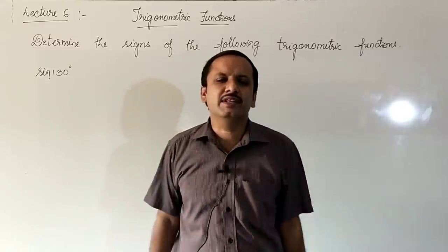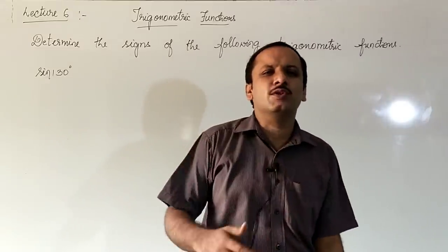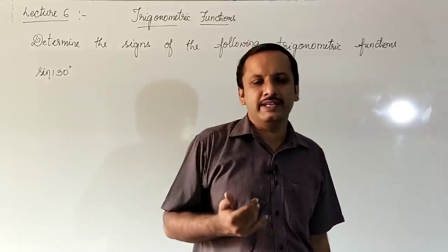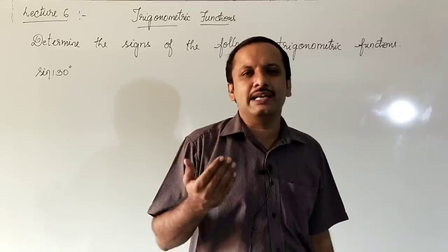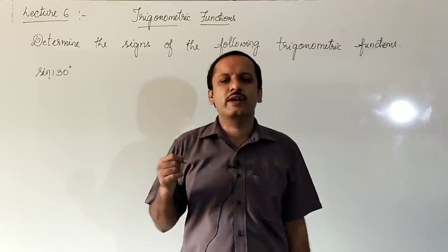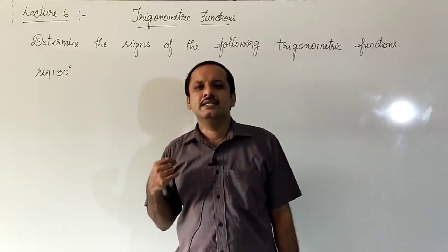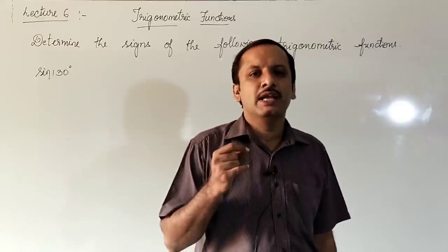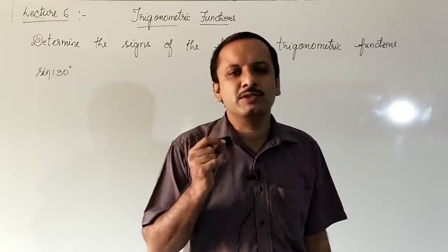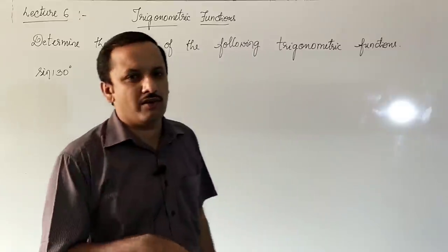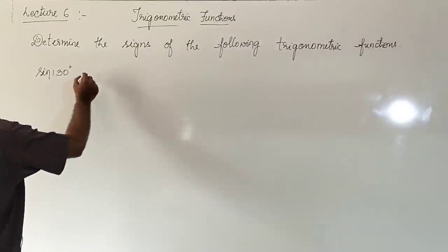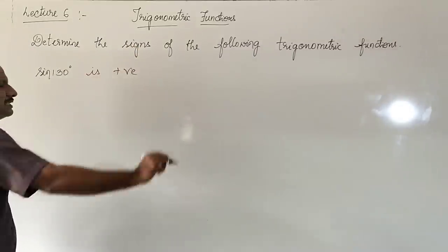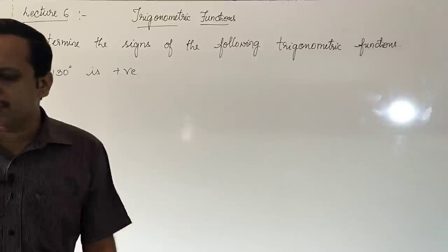130 degrees is greater than 90 degrees but less than 180 degrees. Therefore it lies in the second quadrant. In the second quadrant, sine is positive. So sin 130 degrees is positive.